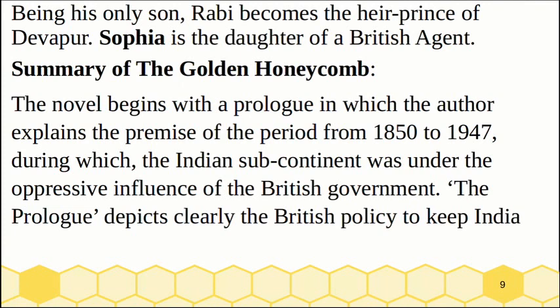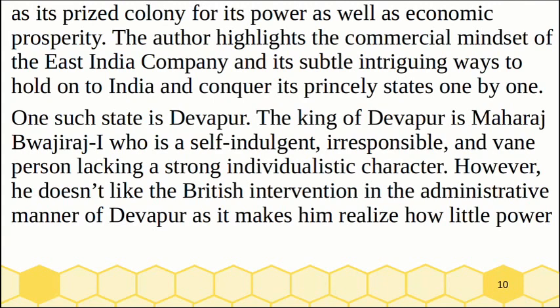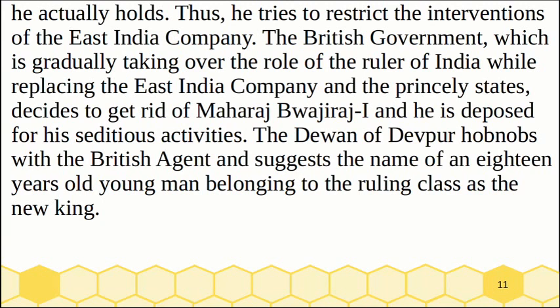The novel begins with a prologue in which the author explains the premise of the period from 1850 to 1947, during which the Indian subcontinent was under the oppressive influence of the British government. The prologue depicts clearly the British policy to keep India as its prized colony for its power as well as economic prosperity. The author highlights the commercial mindset of the East India Company and its subtle, intriguing ways to hold on to India and conquer its princely states one by one. One such state is Devpur. The king of Devpur is Maharaj Bajirao I, who is a self-indulgent, irresponsible, and vain person lacking a strong individualistic character. However, he doesn't like the British intervention in the administrative affairs of Devpur, as it makes him realize how little power he actually holds. Thus, he tries to restrict the interventions of the East India Company.